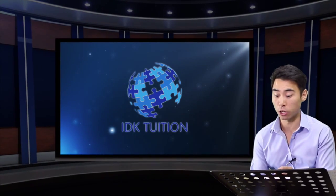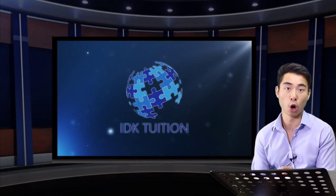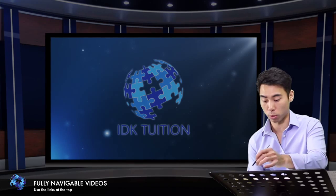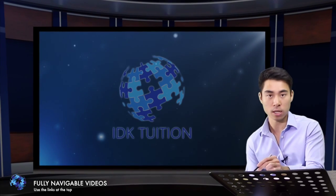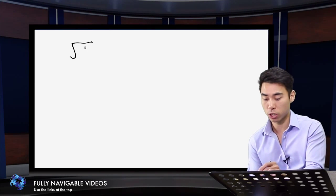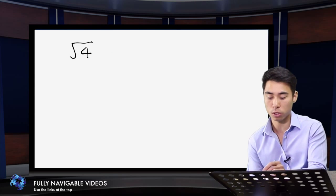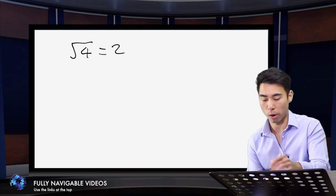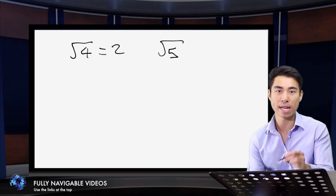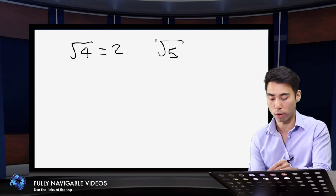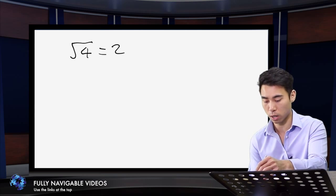So SIRDs — not a rude word or a word you'd use to describe your little brother. A SIRD is essentially a square root which has no integer value. So if I have the square root of 4, that is not a SIRD because the square root of 4 equals 2. Whereas the square root of 5 — there's no integer value equivalent to this, so that is a SIRD.